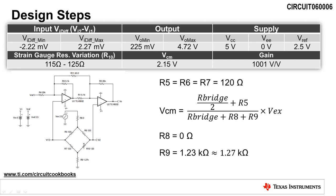To produce the maximum current through the bridge, we will set R8 equal to 0 ohms. Solving the equation for R9 yields a value of 1.23 kilo ohms, whose closest standard resistor value is 1.27 kilo ohms.